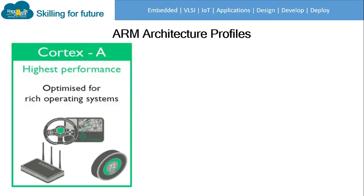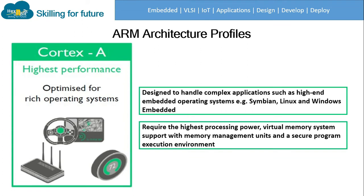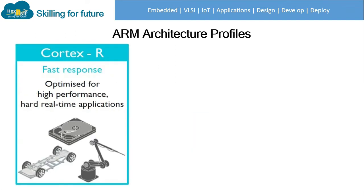Cortex-A: 'A' stands for Application-specific, designed to handle complex applications such as high-end embedded operating systems — examples include Symbian, Linux, and Windows Embedded. It requires the highest processing power, virtual memory system support with memory management units, and a secure program execution environment. Sample products of Cortex-A include high-end mobile phones and electronic wallets for financial transactions.